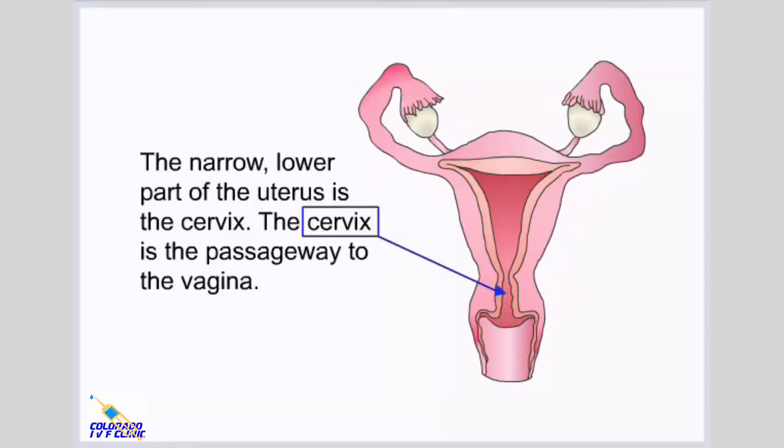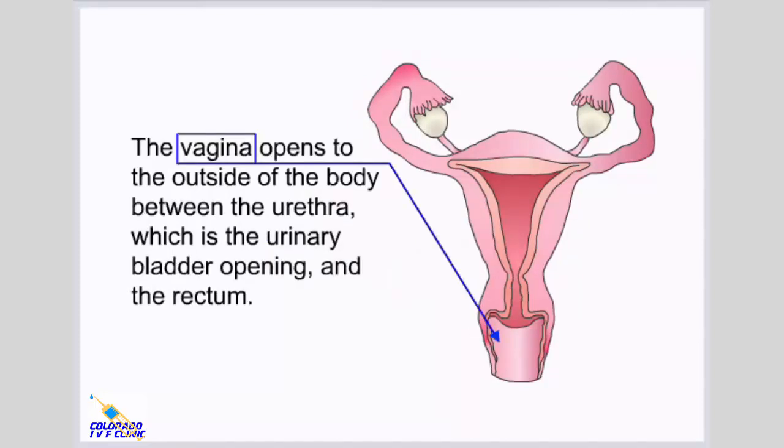This is called a menstrual period. The narrow lower part of the uterus is the cervix, which is the passageway to the vagina. The vagina opens to the outside of the body between the urethra, which is the urinary bladder opening, and the rectum.